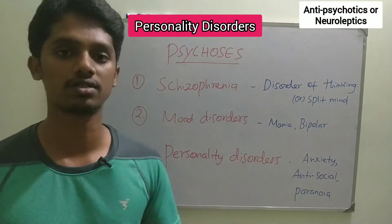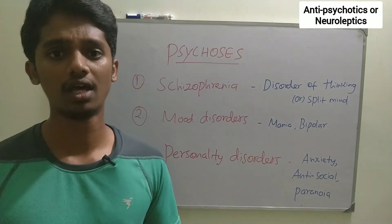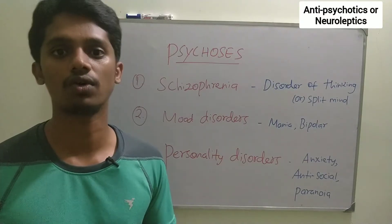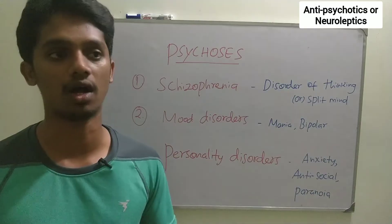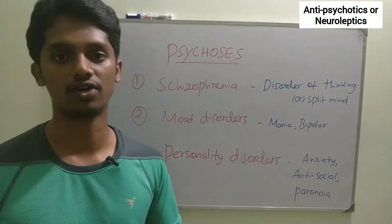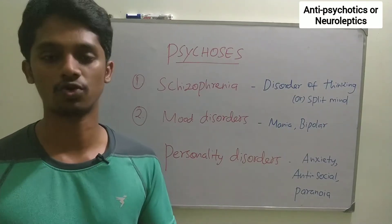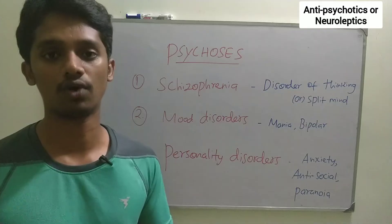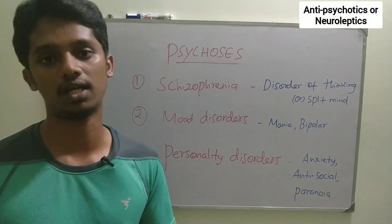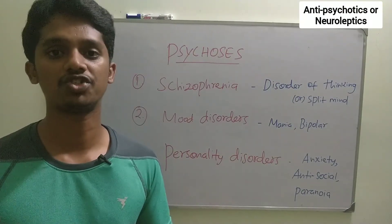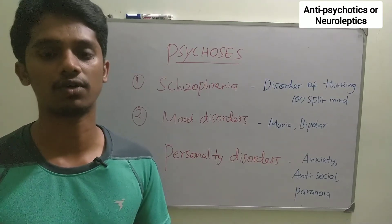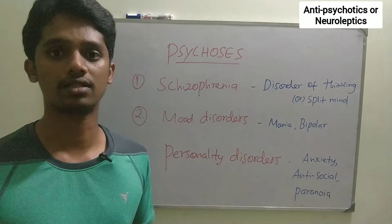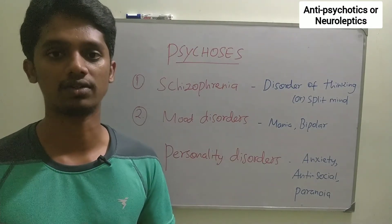The last one is personality disorders. For example, anxiety — when someone is in a social situation, they can hesitate a lot. Then there is anti-social disorder. There is also paranoid disorder. These conditions involve psychosis, and this is why we use anti-psychotic drugs.